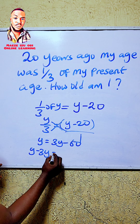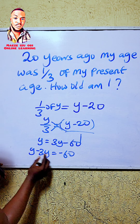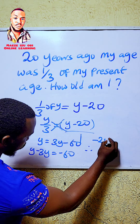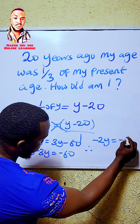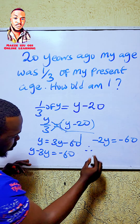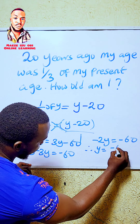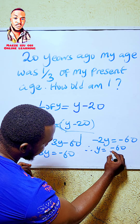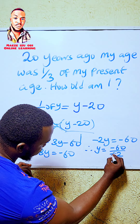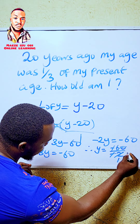Rearranging: y minus 3y equals minus 60, so minus 2y equals minus 60. Dividing both sides: y equals minus 60 over minus 2, the negatives cancel, giving y equals 30.